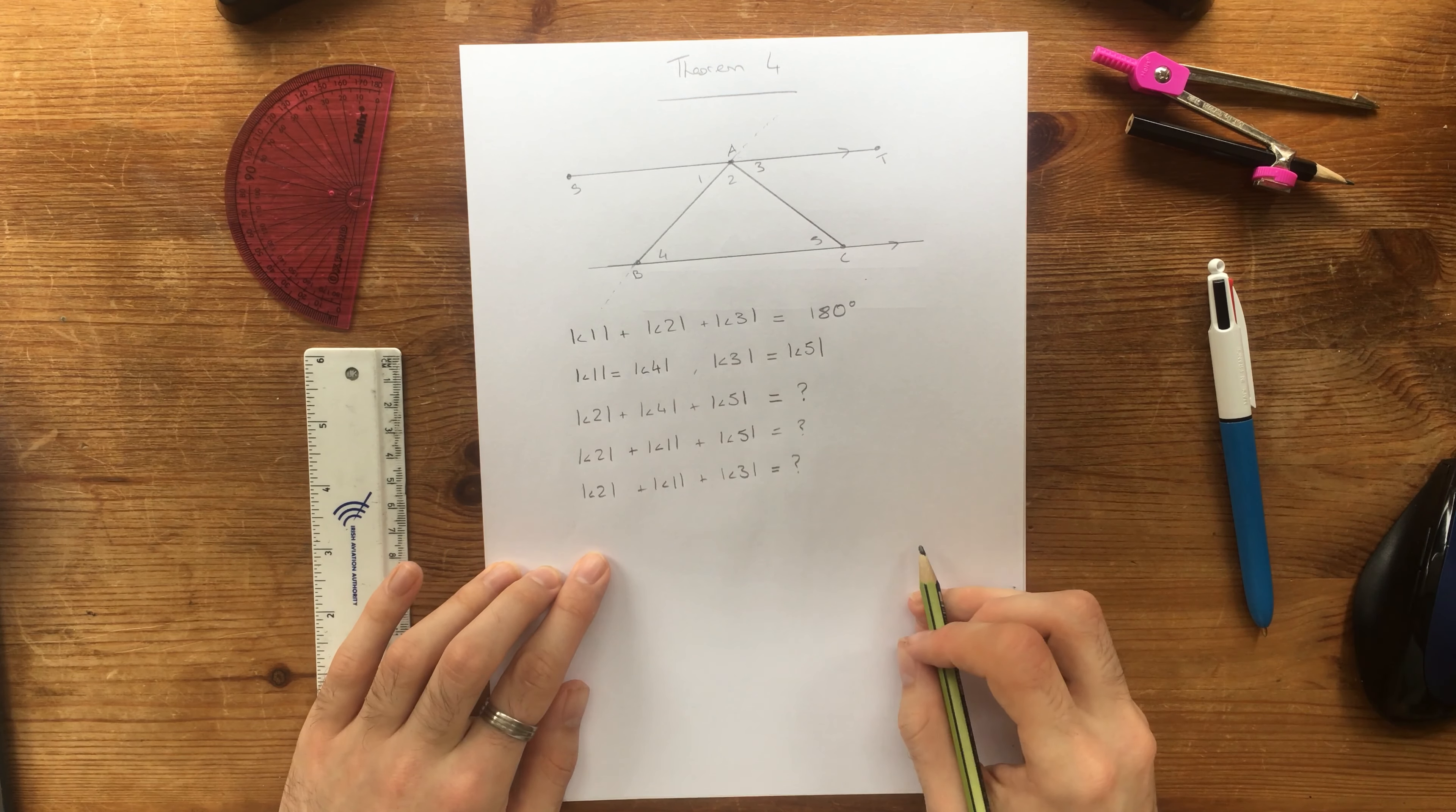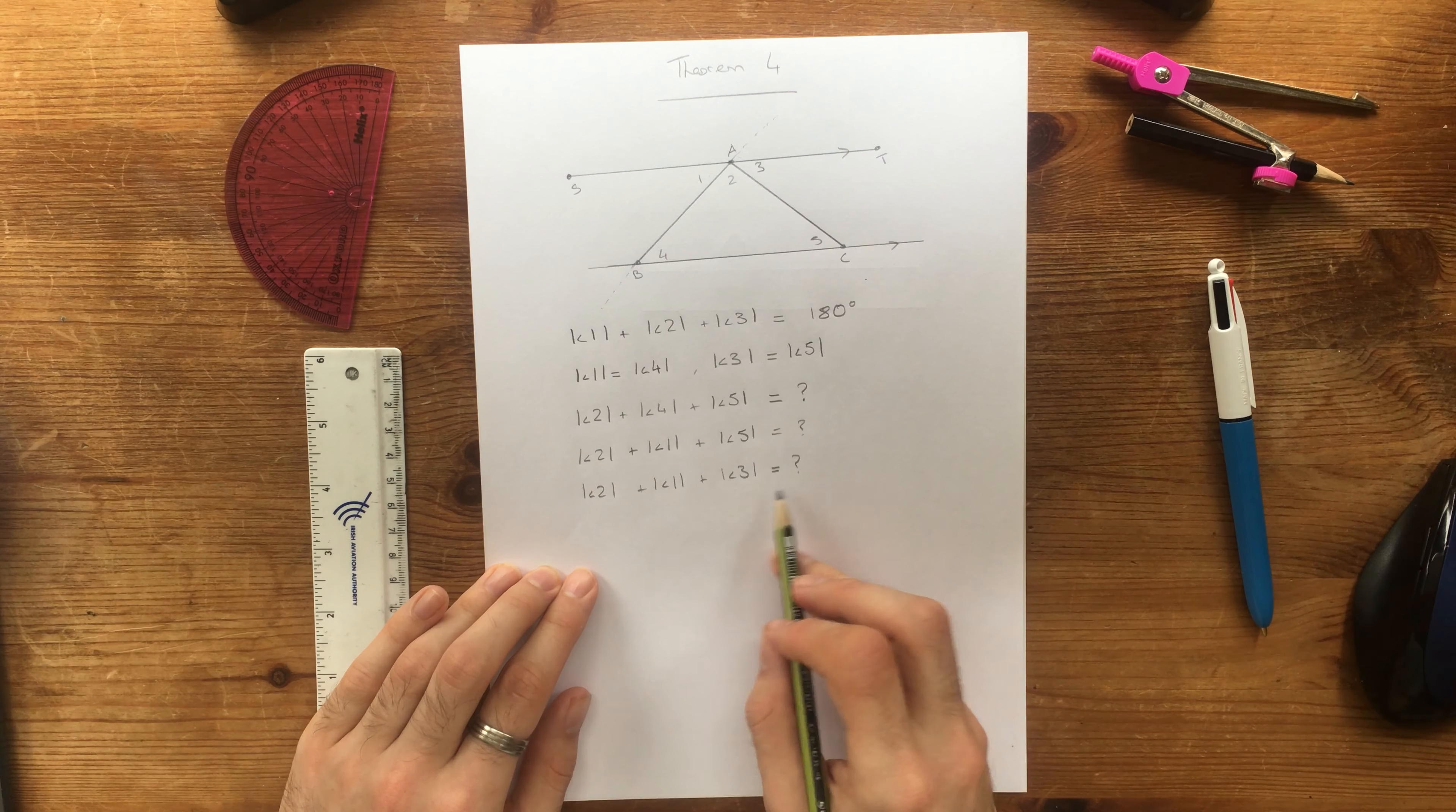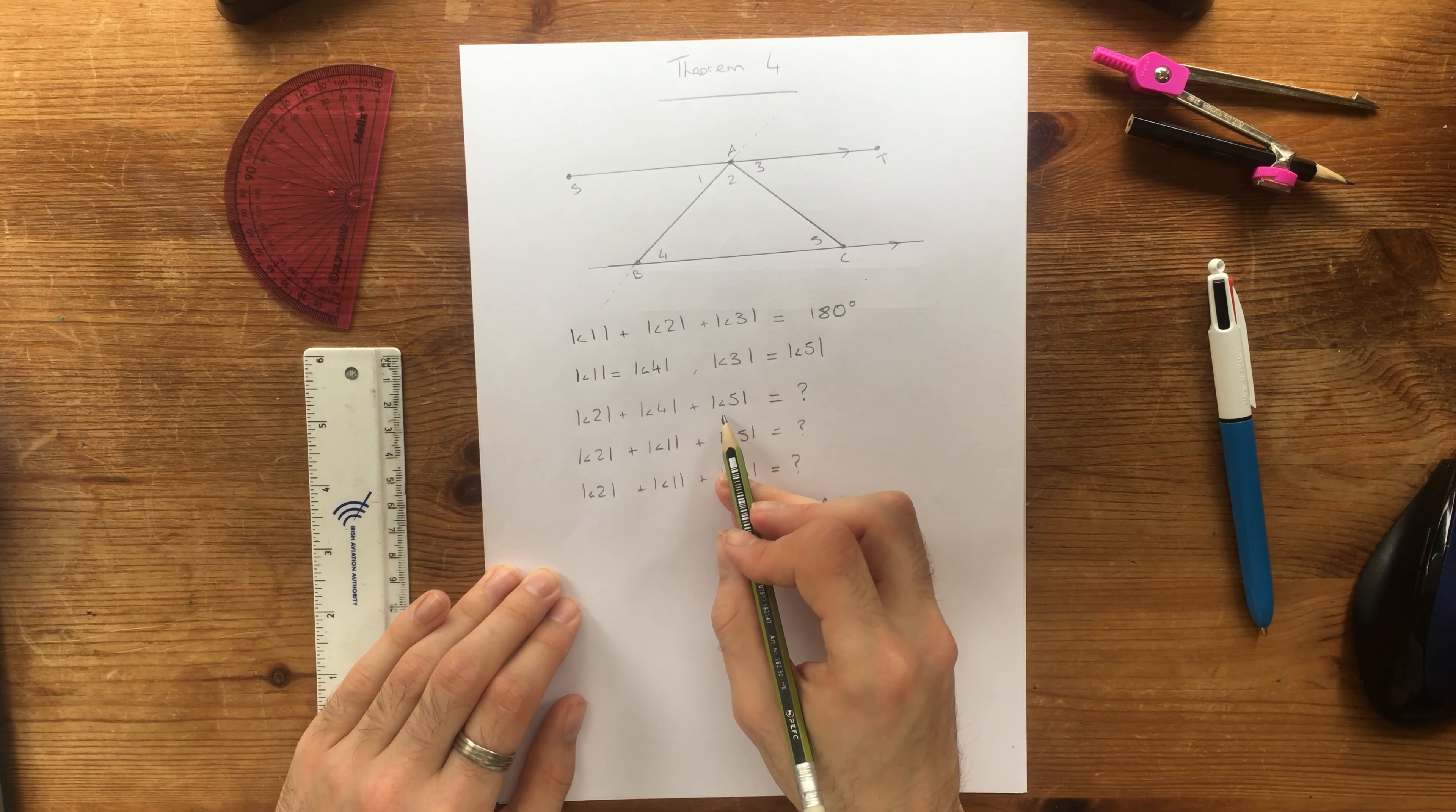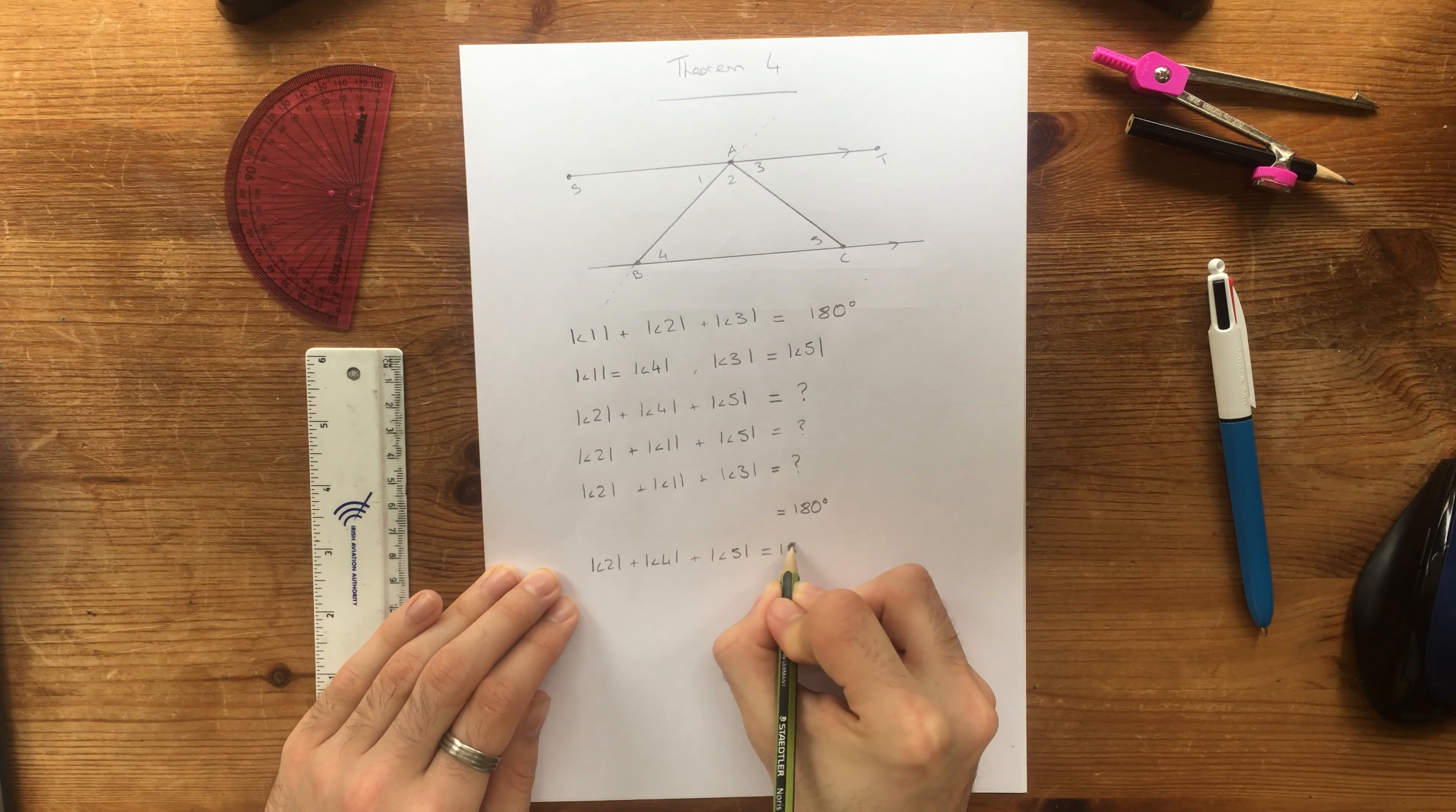Now, does this look familiar? The very first thing we did was we said angle 1 plus angle 2 plus angle 3 is equal to 180 degrees. Now we have angle 1, 2, and 3 equal to something. Also equal to 180 degrees. Which means that this angle 2, 4, and 5, angle 2 plus angle 4 plus angle 5, is equal to 180 degrees.